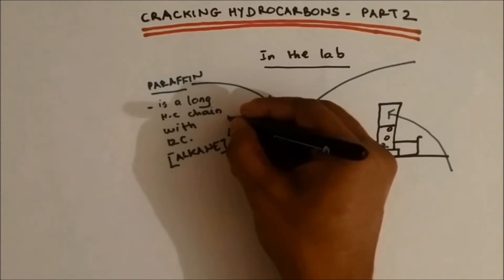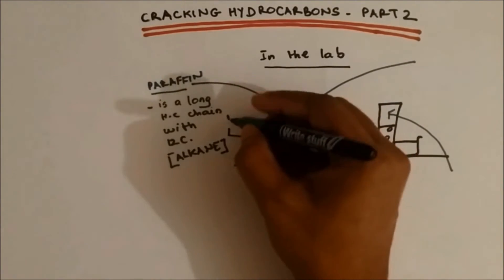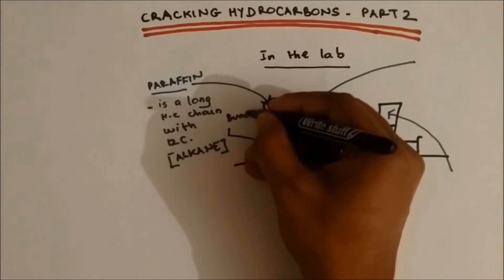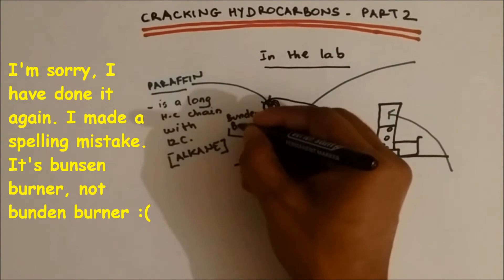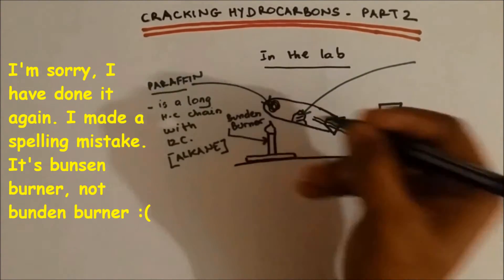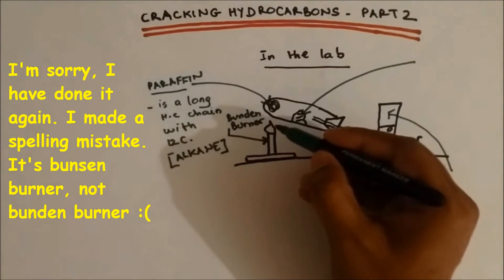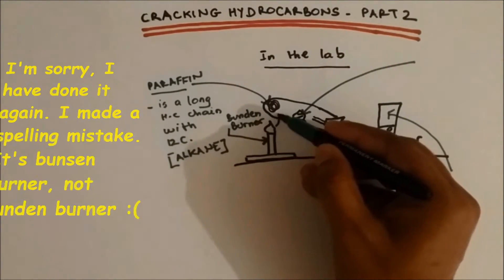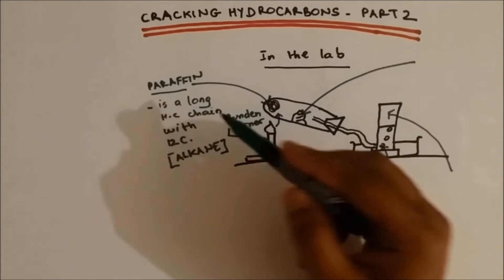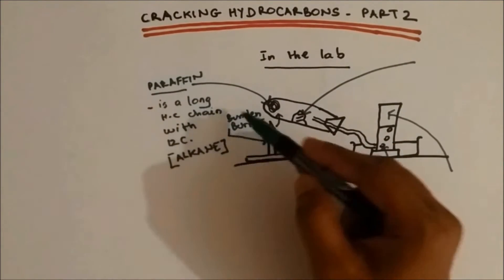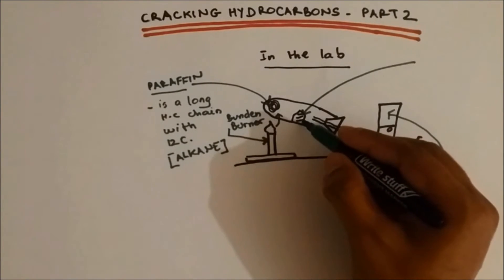Whereas this one, you can see from my diagram, is a Bunsen burner. And what we're doing is heating up the paraffin, the long hydrocarbon chains, so the long hydrocarbon chain will be broken down. And what do you think these are?